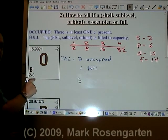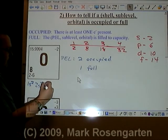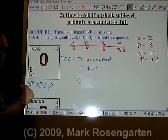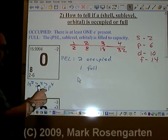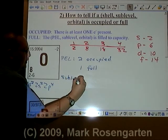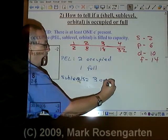What about sublevels? When we break this down, it's 1s2, 2s2, 2p4. That adds up to the eight electrons that we have. This sublevel, this sublevel, and this sublevel are occupied. So for sublevels, we have three that are occupied.